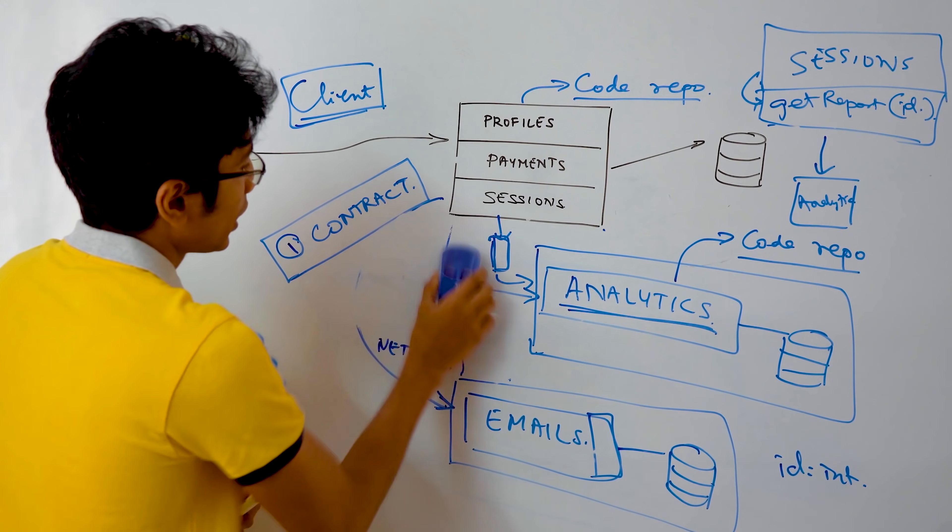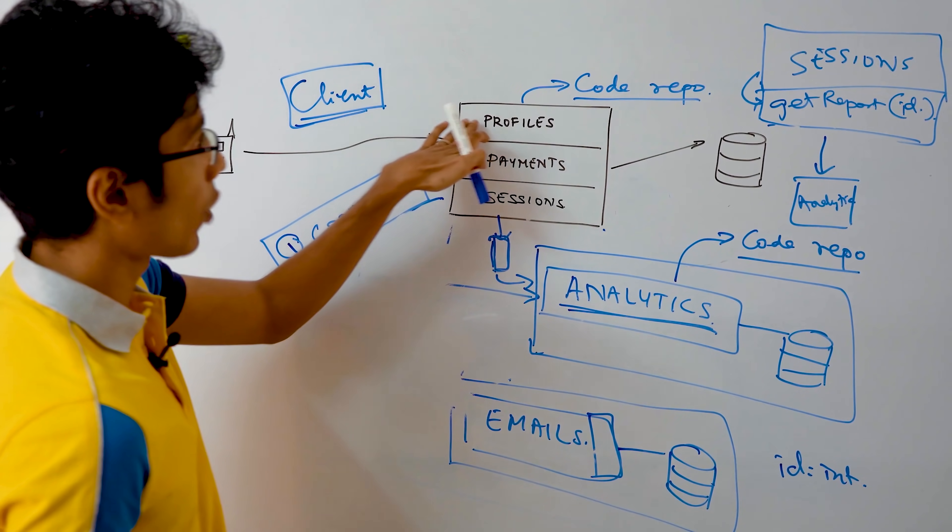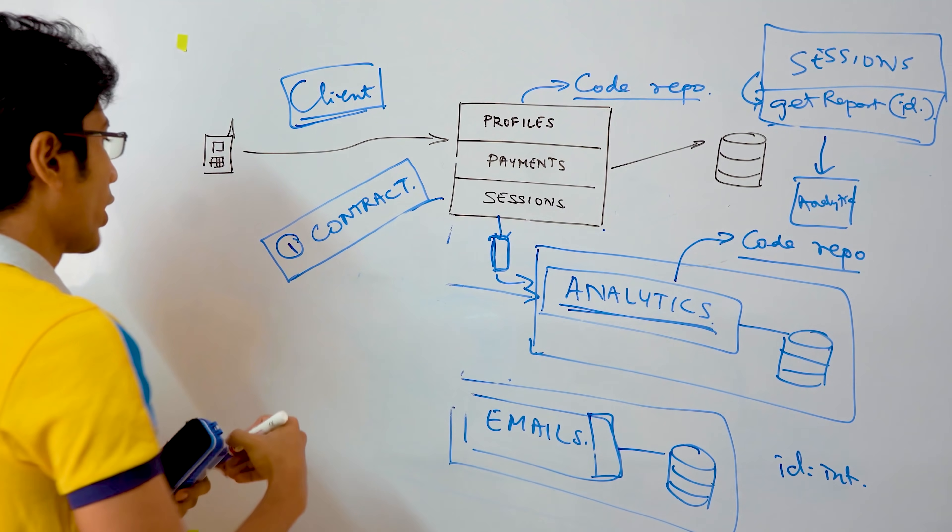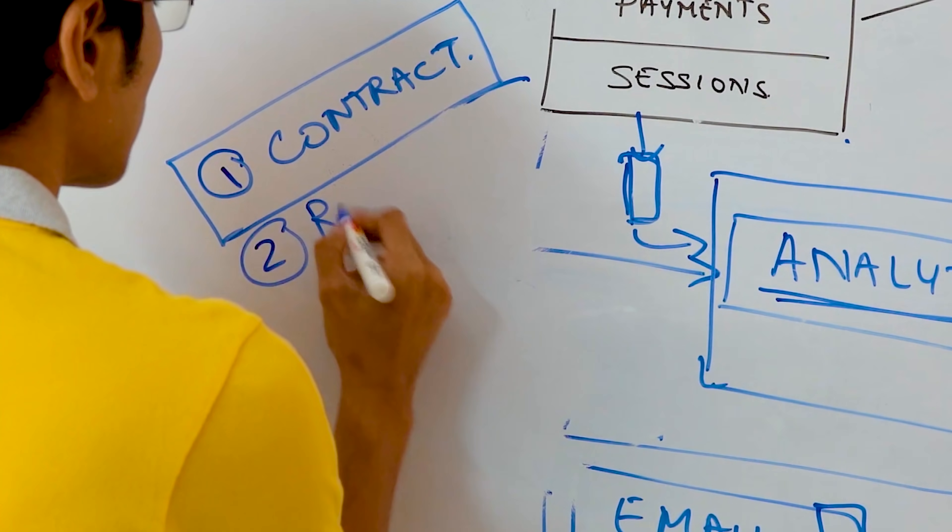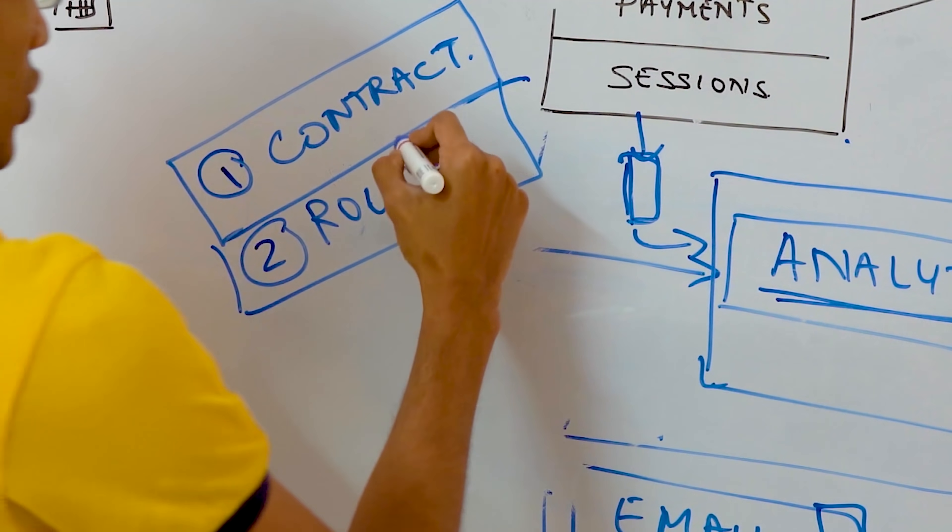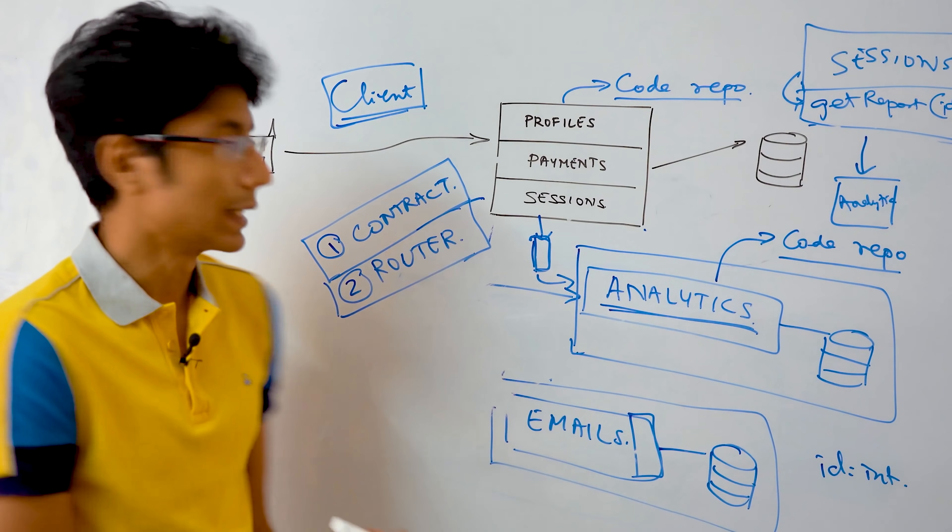The second thing we need to do is also have a mechanism for routing requests from any service to another service. So that's point number two. We need some sort of a router. Most likely it's going to be the load balancer or the service registry, which routes requests based on service capabilities.